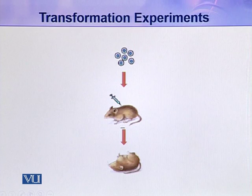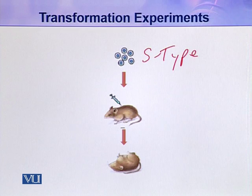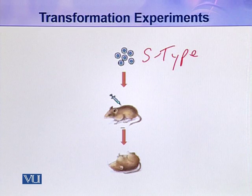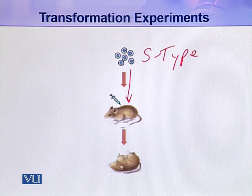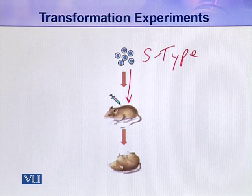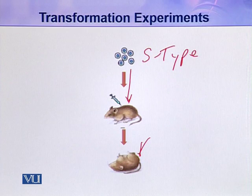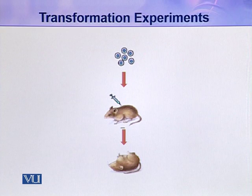In the next experiment, he took S-type bacteria — smooth bacteria — because these bacteria are virulent and they have the ability to cause pneumonia in the mouse. He injected these bacteria into different mice and got the expected results: the mice got pneumonia and died.